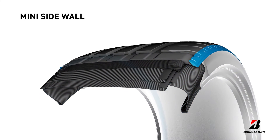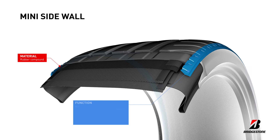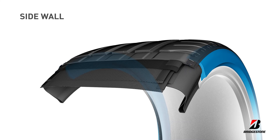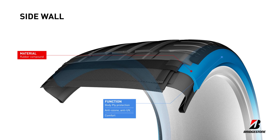The next component is the mini sidewall, made of a rubber compound. It is positioned to harmonise the junction between the tread and sidewall. The sidewall is made of highly resilient and heat resistant rubber compounds, with a specifically designed gauge. It protects the body ply and increases comfort by absorbing the tyre flex. The sidewall also features markings such as size, name, homologation codes and more.